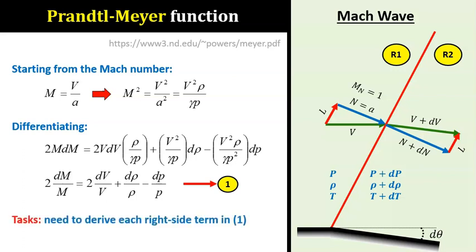What we need to do next is to expand each of the differential terms dV over V, dρ over ρ, and dP over P to finally get dM over M. By knowing dM over M, we can know exactly how much M changes across the fan. We also need to relate between all these differential changes and the small deflection angle dθ.